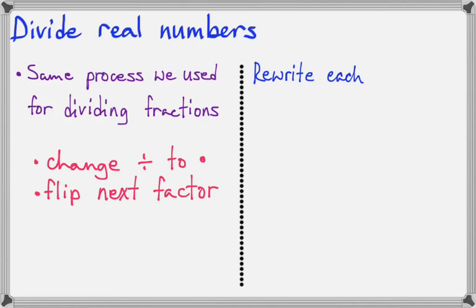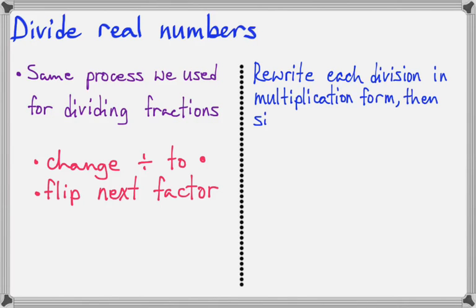That's why we had to talk about the multiplicative inverse before we could do this. So for this next problem, let's write the division in multiplication form and then simplify. Here's our problem: negative 32 divided by 4.